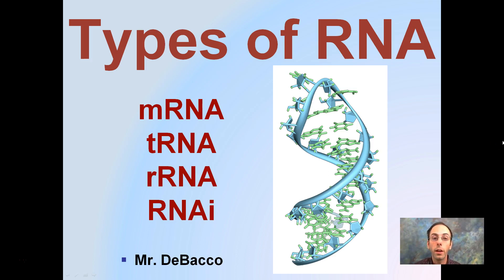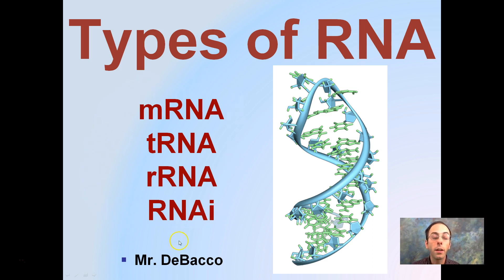Here we're going to go over different types of RNA. Up to this point, you might have thought there's only one type of RNA. When in fact, there's actually four main different types of RNA. We have them labeled here: mRNA, tRNA, rRNA, and RNAi. We're going to go through each of these in detail and try to give an explanation in how they relate to cellular and biological processes.